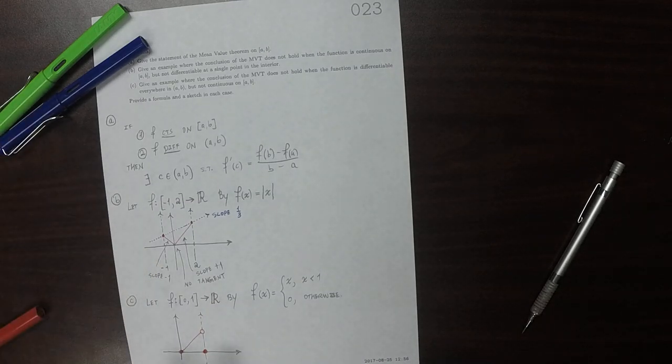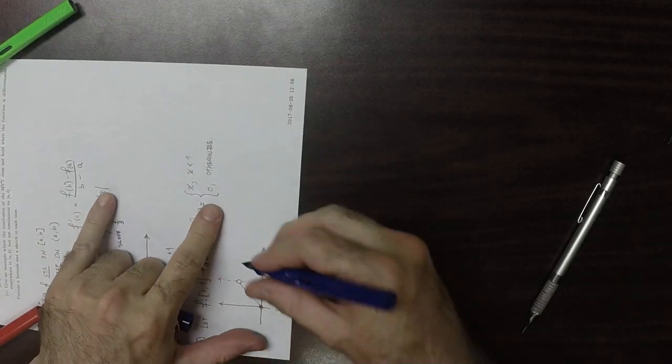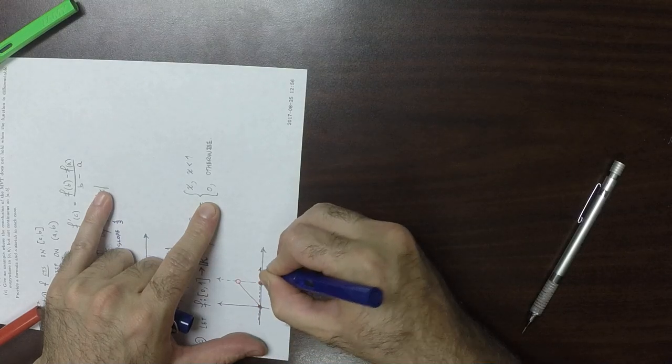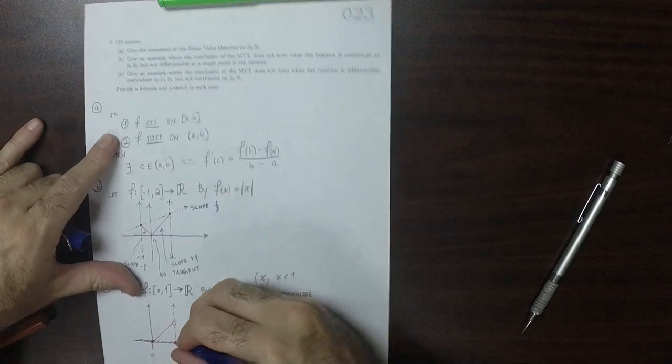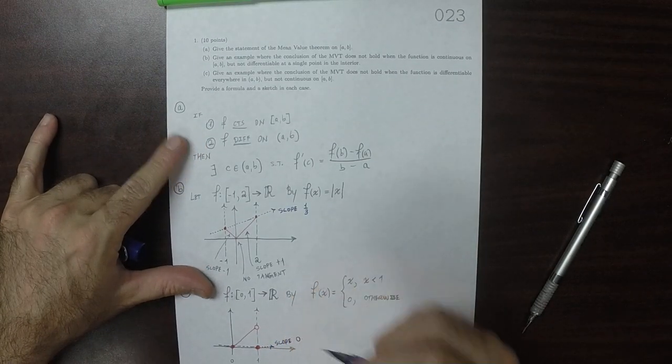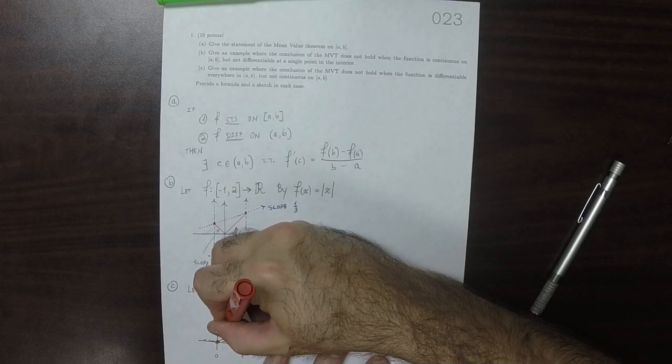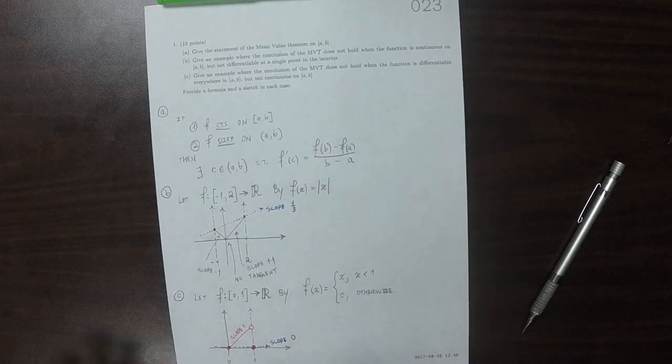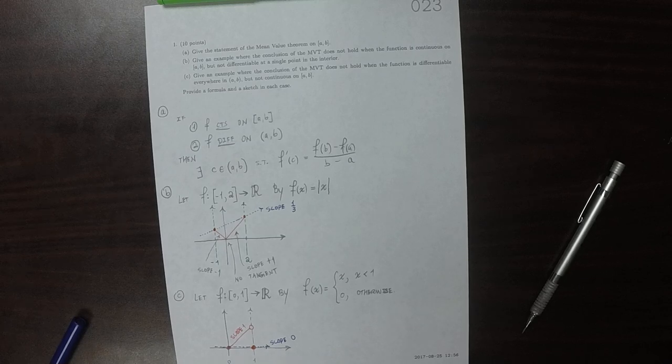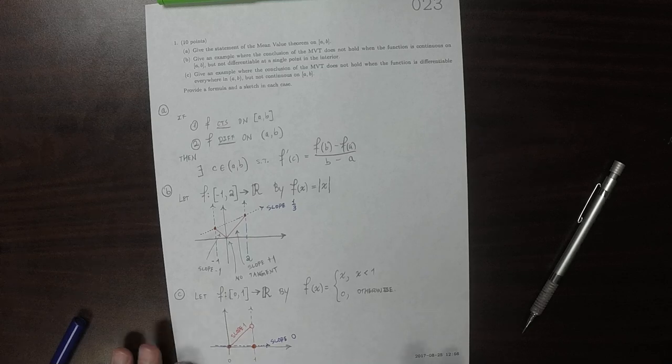So if you take those two points there, the secant slope has slope 0. However, all of this has slope 1. So everything in the middle has slope 1, but the secant slope is slope 0. So there's nowhere in the middle where you can get slope 0.